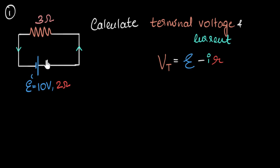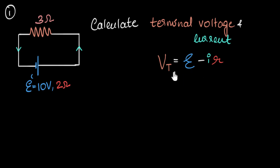As the charge moves across the battery, it gains some energy — that is the EMF — and it loses some energy due to the internal resistor. When you subtract them, you get the net energy gained. If this concept isn't familiar, go back and watch the video on cells, EMF, and terminal voltage, then come back. To calculate terminal voltage, we need the EMF (that's 10), R (that's two, the internal resistance), and the current — but we don't have the current yet.